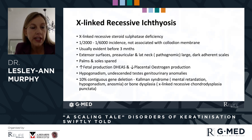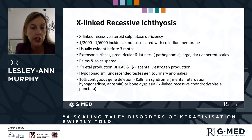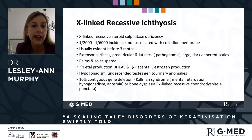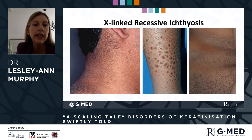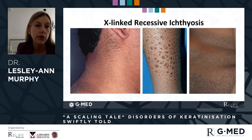In about 10% of affected males there are contiguous or larger gene deletions. Kallmann syndrome, where the ichthyotic presentation is accompanied by mental retardation, hypogonadism, and anosmia; or in the instance of chondrodysplasia punctata, where there is very characteristic stippling of the epiphyses noted. These are the clinical appearances — as commented, the involvement of the lateral neck is very, very characteristic, with these larger, darkly pigmented scales on limbs and trunk.